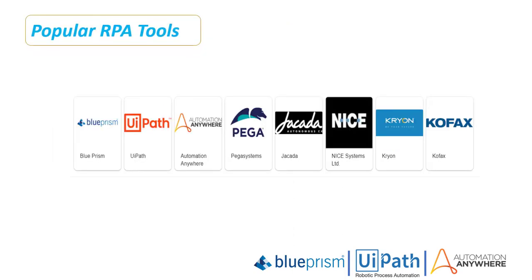Now we will see what are the popular RPA tools available in the market. The first one is Blue Prism, which has very high demand. Along with that, UiPath and Automation Anywhere are the top three RPA tools available in the market. These are the top 10 robotic process automation tools. Additionally, Microsoft is now releasing a powerful automation tool called Microsoft Power Automate, which is coming into the market. We will discuss Microsoft Power Automate in the later part of this session.